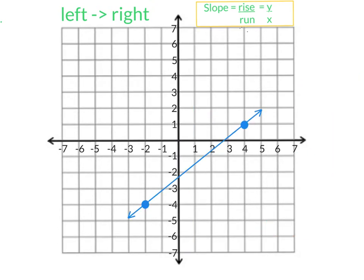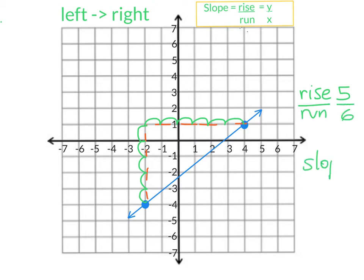I'm going to trace my pathway. I'm going to rise one, two, three, four, five. So I rise five. And I'm going to run one, two, three, four, five, six. So my slope is five-sixths.